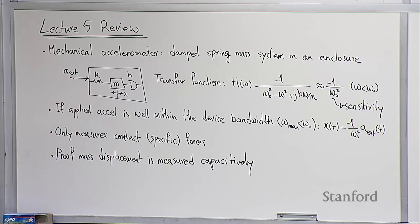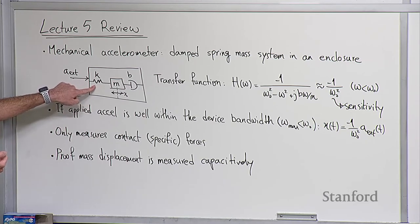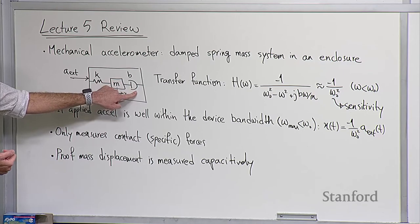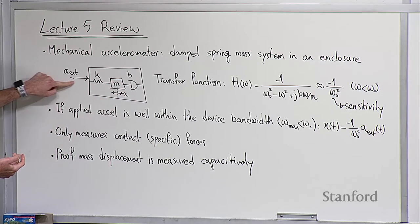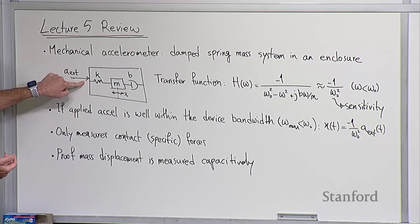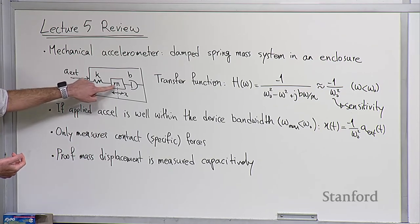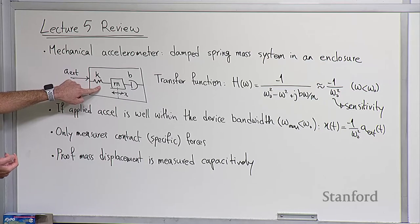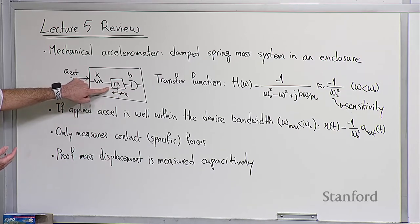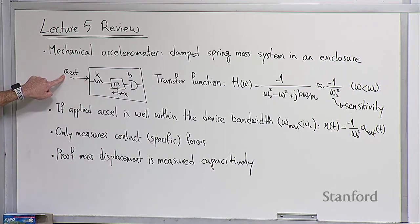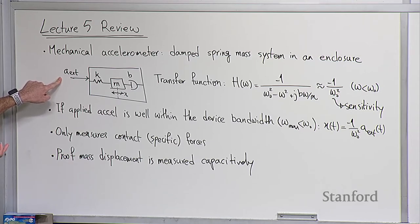Here's a very simple diagram showing it. You have your enclosure — which in the case of a MEMS device is just a chip enclosure — a spring with constant K, a proof mass with mass M, and a damping mechanism with damping factor B. As an external acceleration is applied to the enclosure, that force is coupled to the proof mass through the spring. By solving Newton's equations, we showed that the displacement of the proof mass inside the enclosure is directly proportional to the applied acceleration, in the case that the acceleration waveform's frequency content is within the bandwidth of the device.